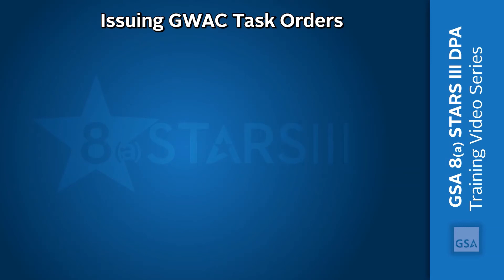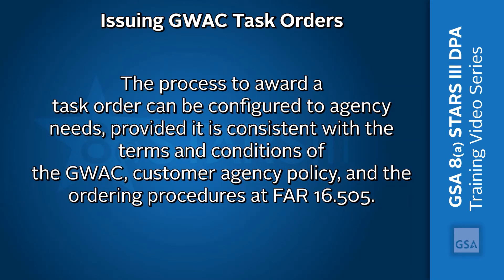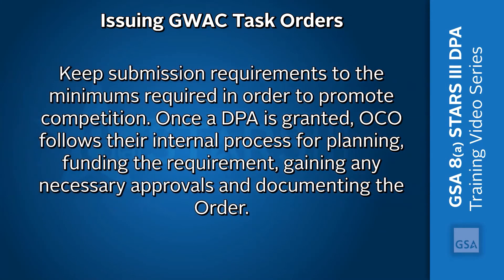The OCO is responsible for acquisition planning and conducting due diligence. The process to award a task order can be configured to agency needs, provided it is consistent with the terms and conditions of the GWAC, customer agency policy, and the ordering procedures at FAR 16.505. It's recommended that OCOs keep submission requirements to the minimums required in order to promote competition. Once a DPA is granted, the OCO follows their internal process for planning, funding the requirement, gaining any necessary approvals, and documenting the order.